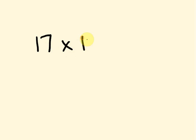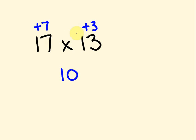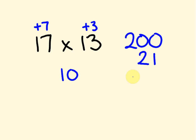In the last video, we looked at multiplying numbers like 17 times 13, using the friendly base number of 10. We noted that 17 was 7 more than 10 and 13 was 3 more than 10. We cross-added: 17 plus 3 gives 20, which becomes 200 because it's a tens number. Then we multiplied 7 times 3 to get 21, giving a final answer of 221.